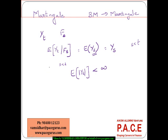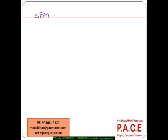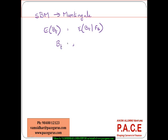Now let us quickly check how a standard Brownian motion becomes a martingale. We need to find the expected value of B_T given the filtration up to time S. We write B_T as B_T minus B_S plus B_S, so the expected value of B_T given F_S becomes the expected value of (B_T minus B_S) given F_S plus the expected value of B_S given F_S.